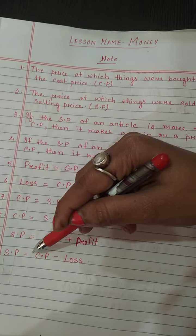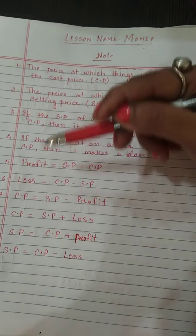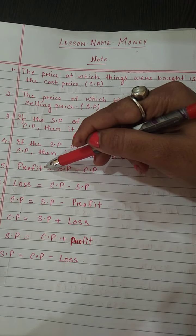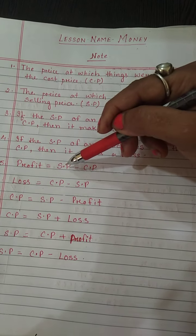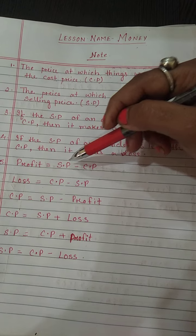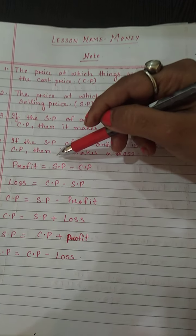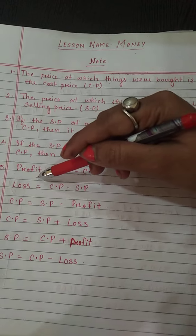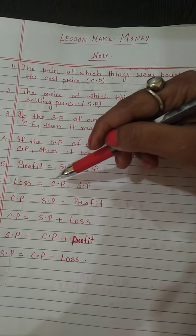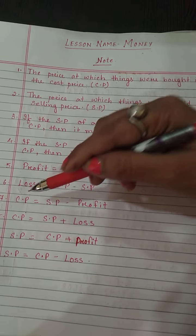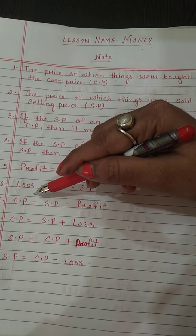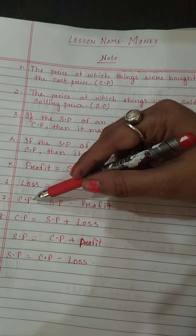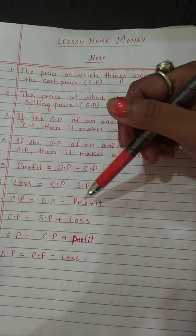Here, to understand profit: if the selling price is more than cost price, then your formula will be SP minus CP. For loss, the formula is CP minus SP. To find out CP when selling price is given and profit is given, the formula is SP minus profit.